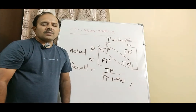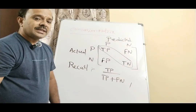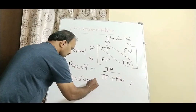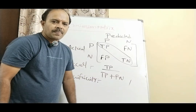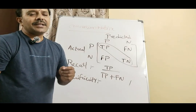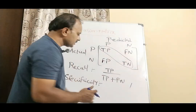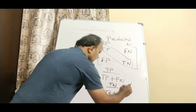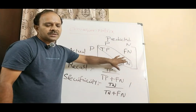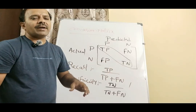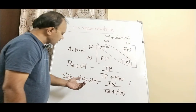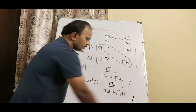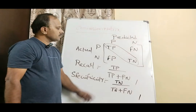We can find one more parameter from the confusion matrix: specificity. Specificity measures how many actual negatives were correctly identified by the model. It is expressed as: true negative divided by (true negative + false negative).